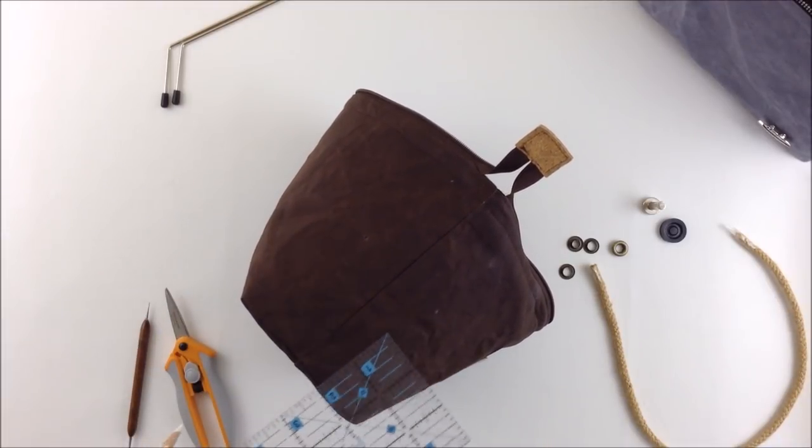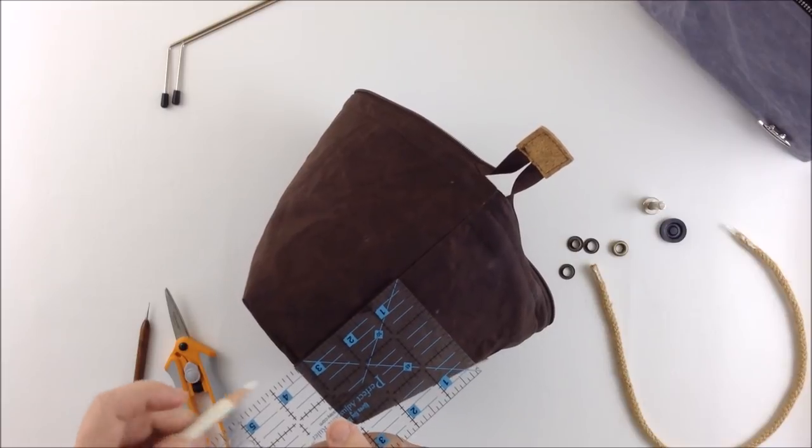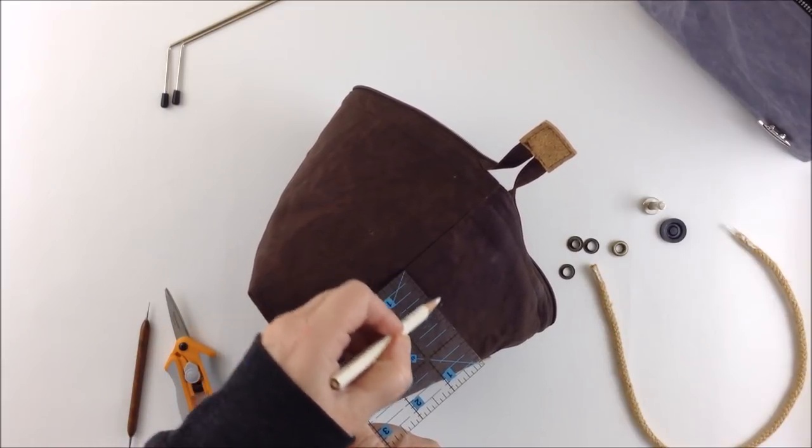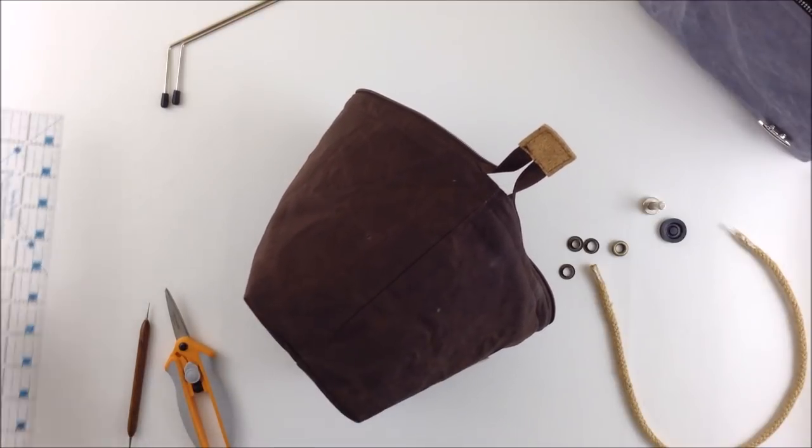Then you do the same on the other side. Measure up three inches from that seam and one and a quarter inches out from that side seam there and make a mark.